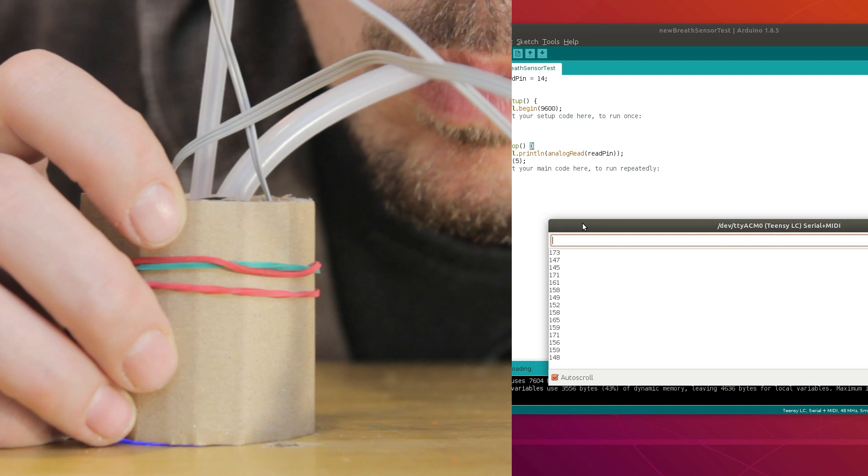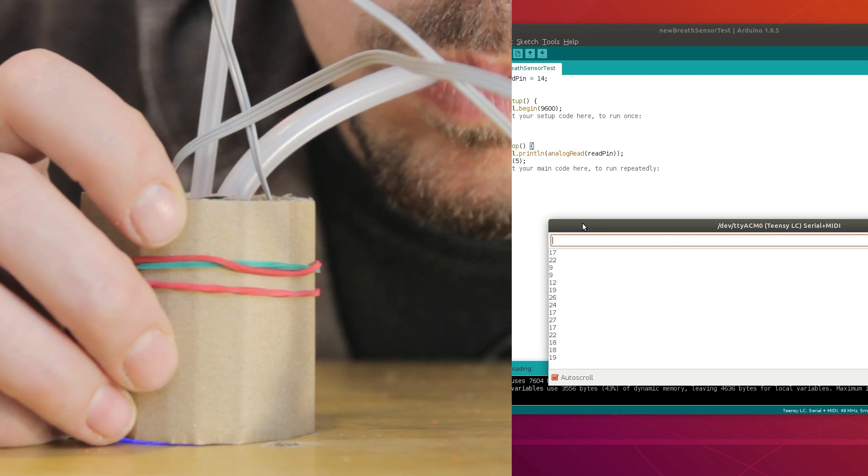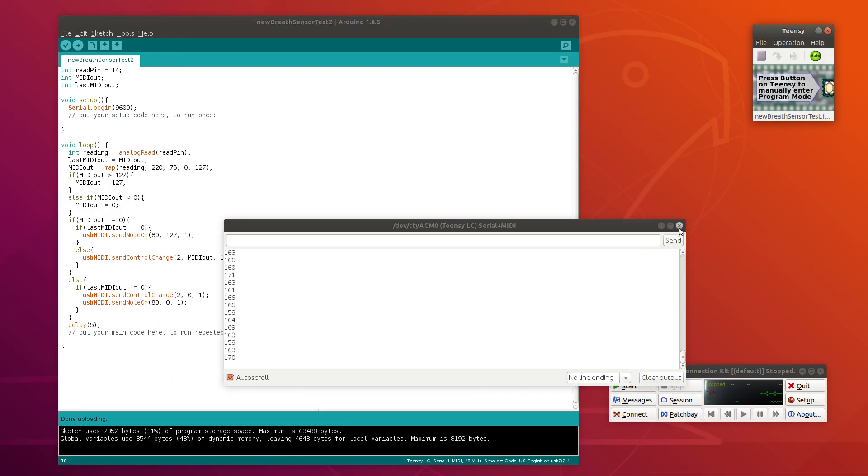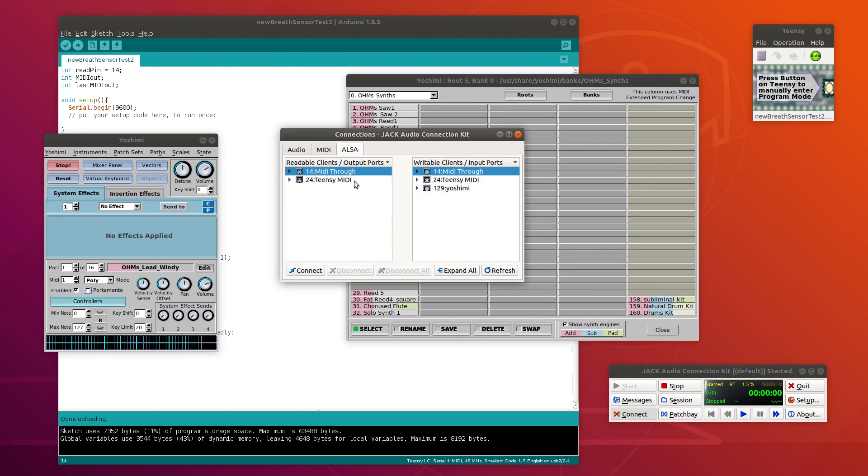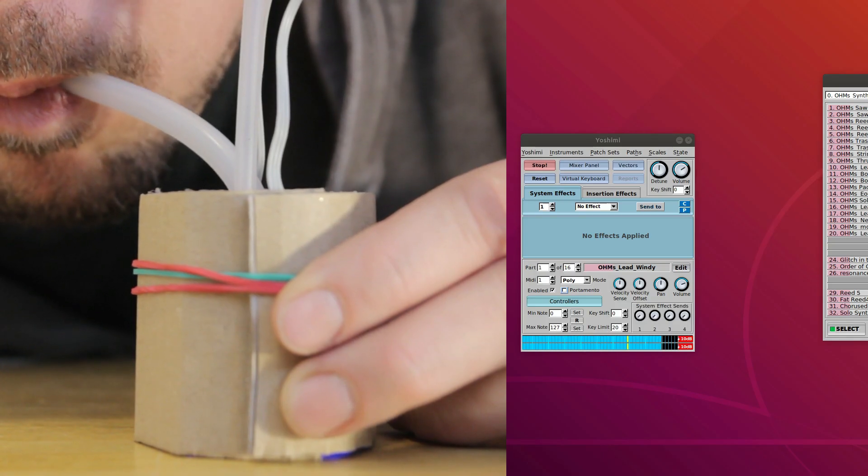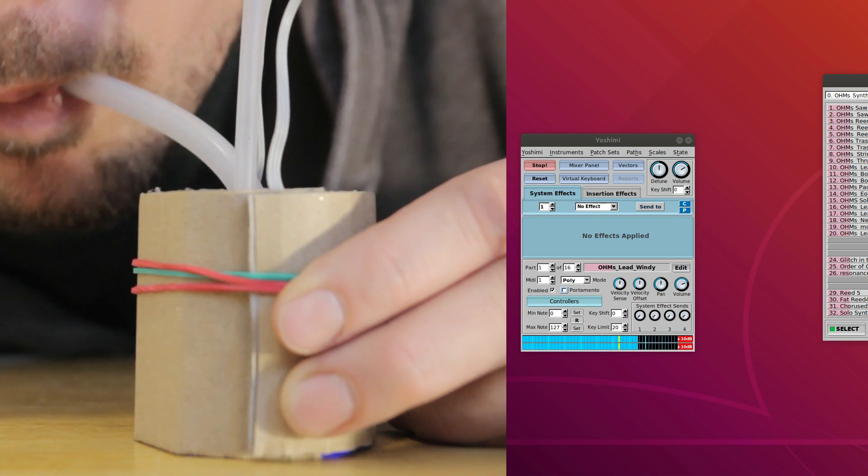So now let's get out our MIDI code from before. I just need to adjust the minimum and maximum values on this mapping function to fit the new setup and then we're good to go. Now we can get out the Yoshimi synthesizer, connect the sensor to it via jack and try it out. Yes, that works great.